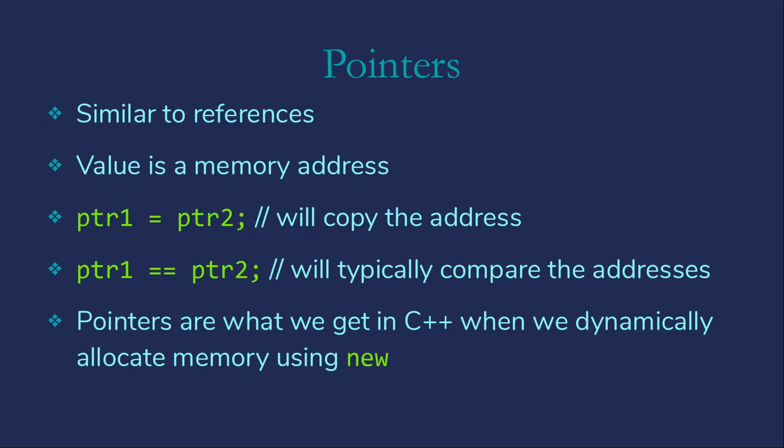So what are these pointer things? They are similar to references in several ways. Their value is a memory address. If I say pointer1 is assigned pointer2, what will be copied is the address. If I say pointer1 equals pointer2, what will be compared is the two addresses. Pointers are what we're going to get in C++ when we dynamically allocate memory using new.